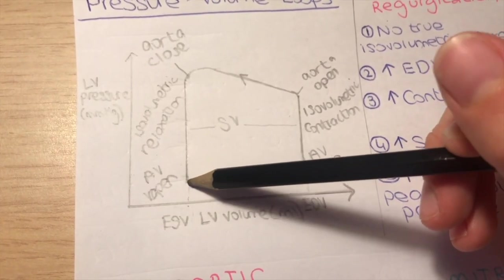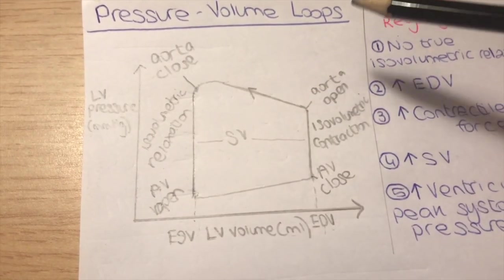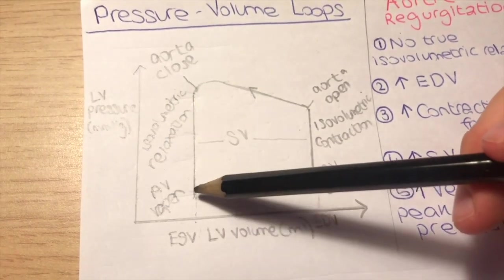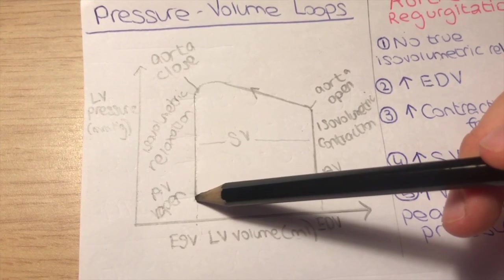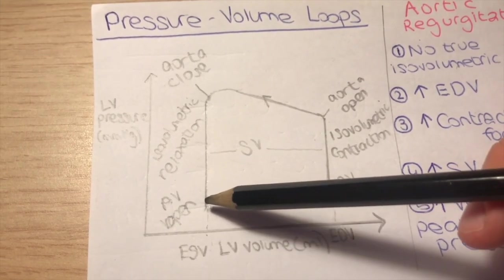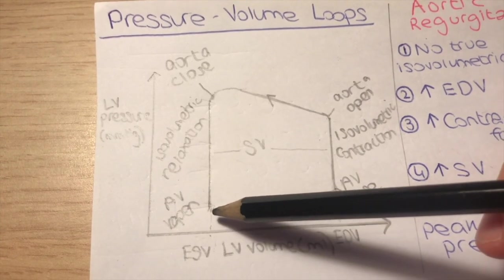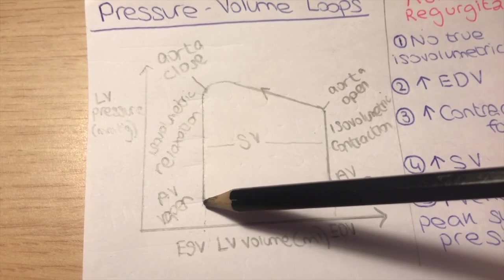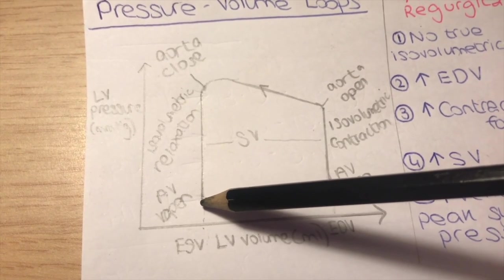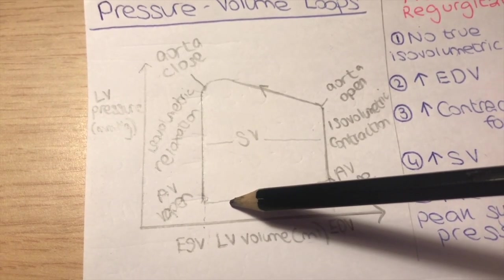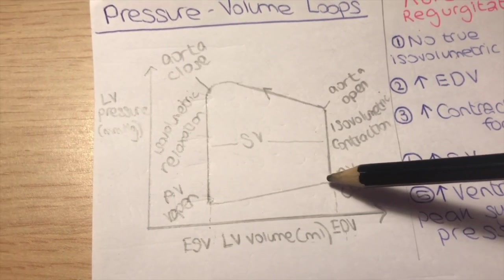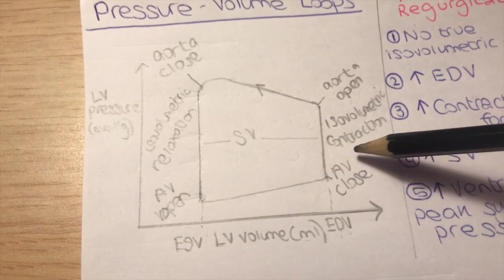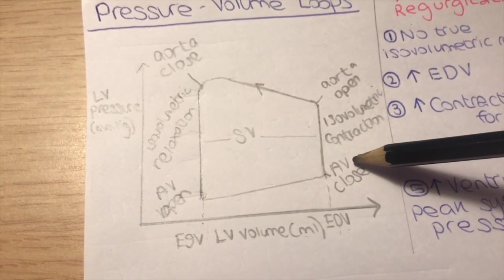Starting off over here, at this point the AV valve — which is the mitral valve in this case because we are looking at the left ventricle — opens because the left atrial pressure is higher than the pressure in the left ventricle. Blood from the atrium moves into the ventricle, increasing the left ventricular volume. At this point, the pressure in the ventricle is higher than the pressure in the atrium, resulting in closure of the AV valve.